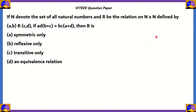Let's look at our first question. If N denotes the set of all natural numbers and R be the relation on N×N defined by (a,b) relates with (c,d) if ad(b+c) equals bc(a+d), then the relation R is: (a) asymmetric only, (b) reflexive only, (c) transitive only, or (d) an equivalence relation.